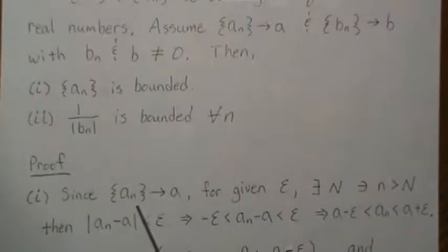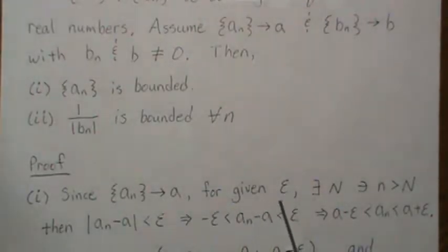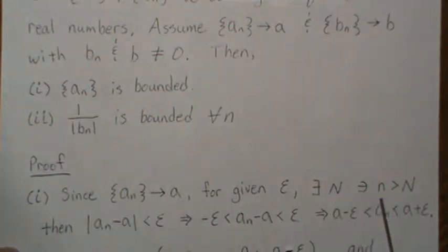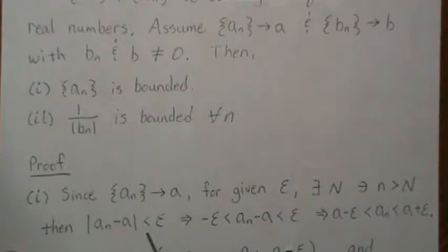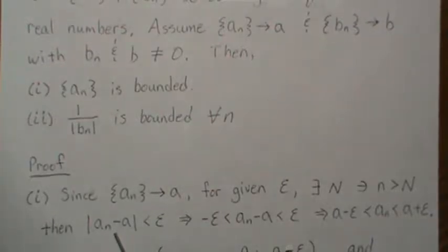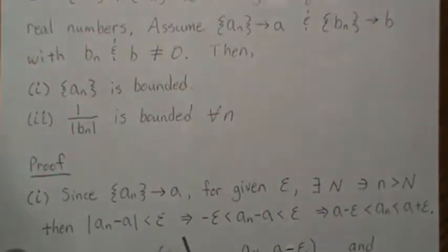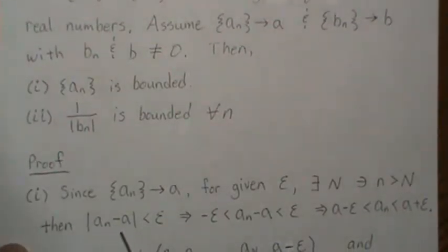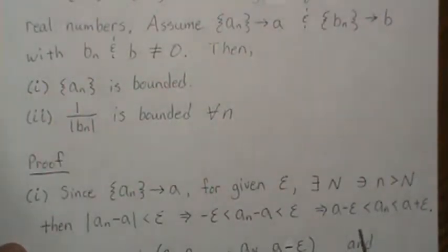To prove that, since An converges to A, that means for a given epsilon there exists an N such that for n greater than this capital N, then this inequality holds. It means that An and A are getting really, really close as n gets big. Using absolute value inequalities, we get this, and then we add A to both sides and we get this.